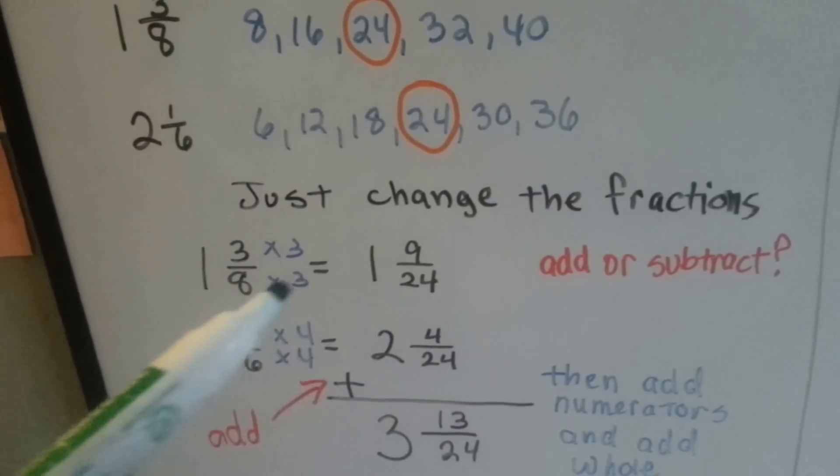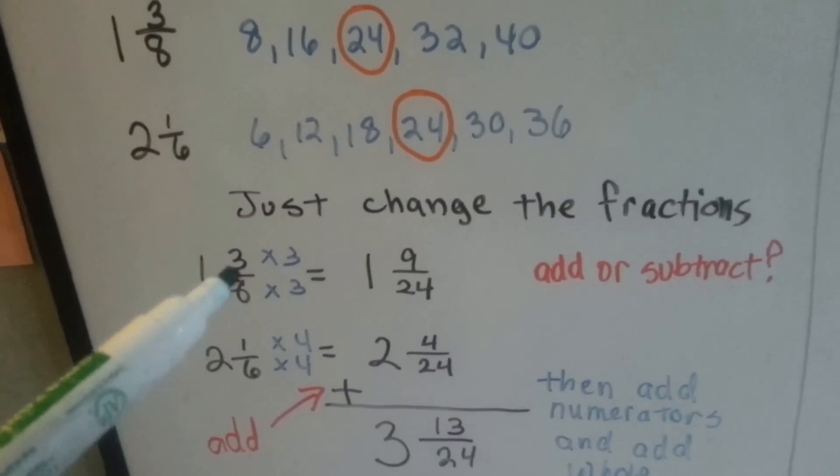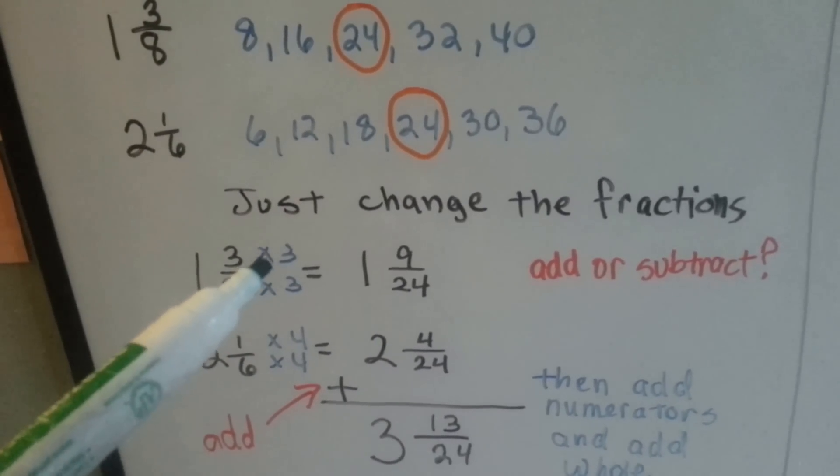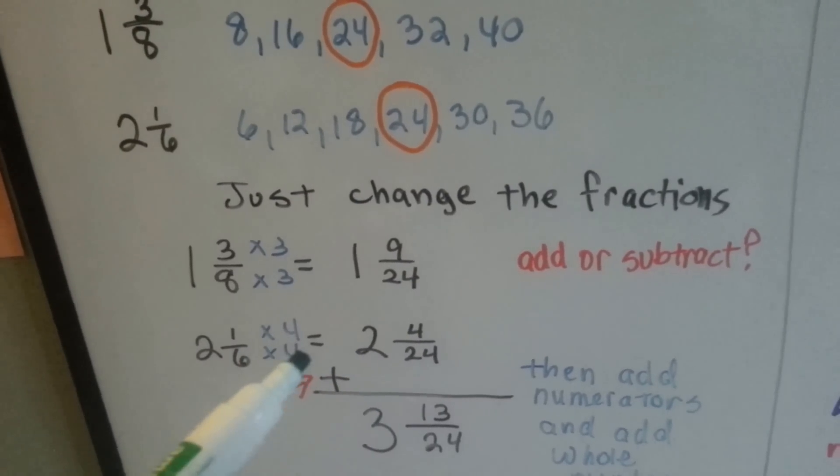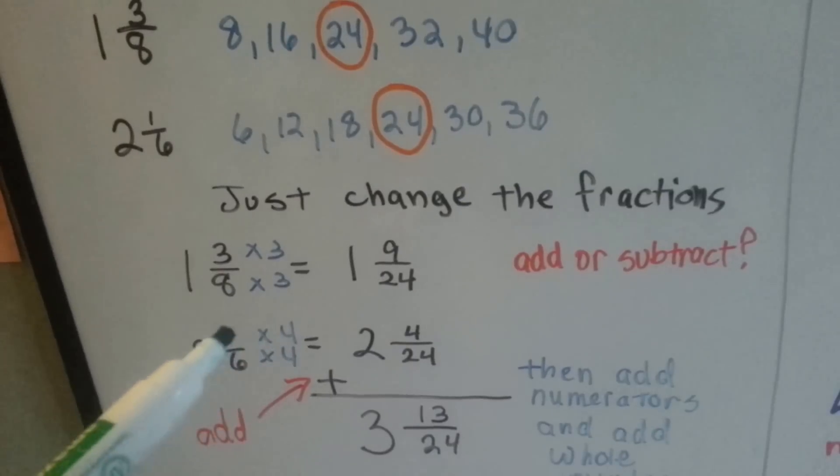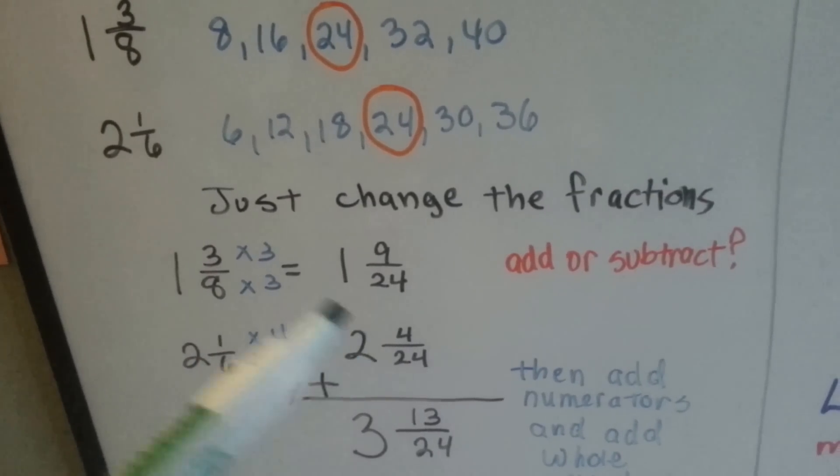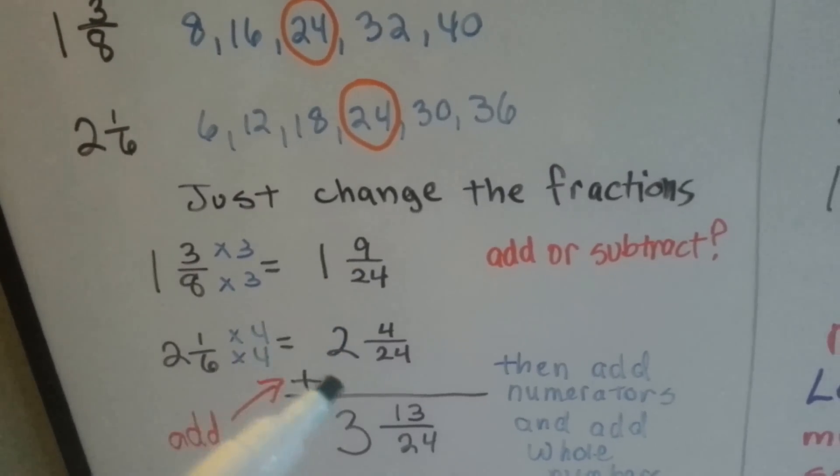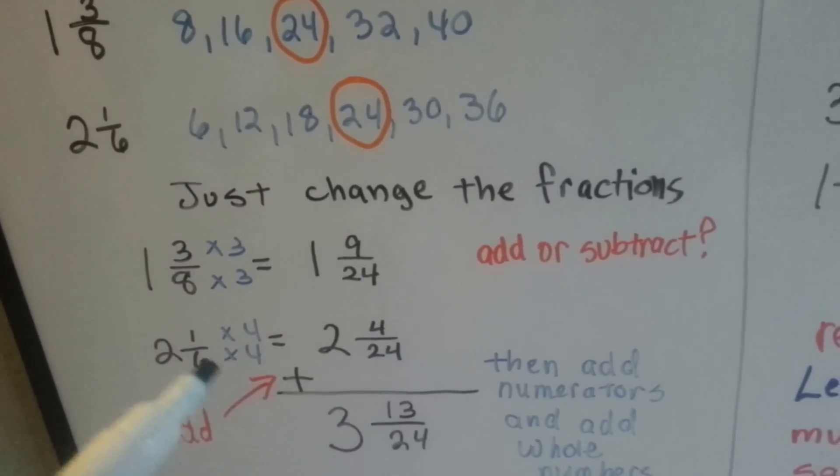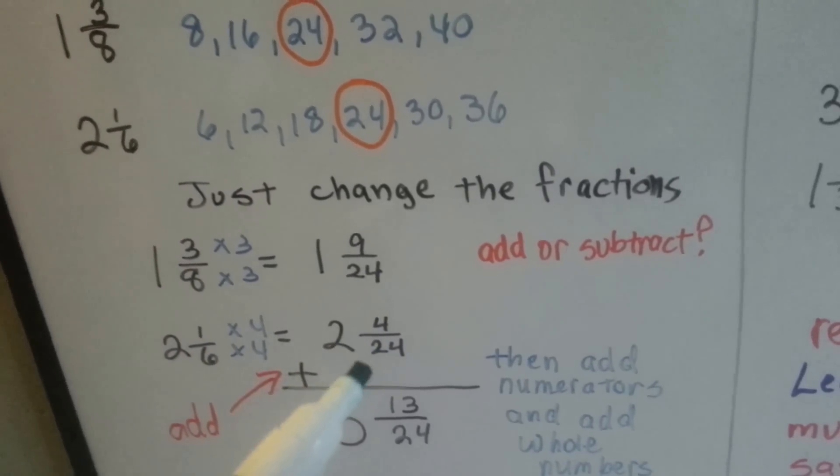What does 8 need to be 24? Multiplied by 3. So the 3 numerator gets multiplied by 3 also. What does 6 need to be 24? It needs to be multiplied by 4. So its numerator wants the same thing, to be multiplied by 4. So after all our multiplication, we get 9 24ths. 1 and 9 24ths. And then this becomes 2 and 4 24ths.